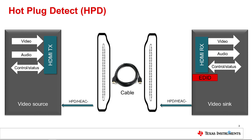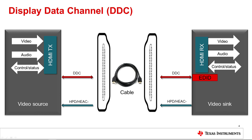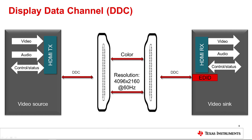HPD should not be asserted until the EDID is available for reading. After 5 volts is applied to the HPD pin, the source will read the capabilities of the sync device via the EDID. After the HPD event, the DDC is used by the HDMI source to determine the capabilities and characteristics of the sync by reading the EDID. The source is then able to adjust parameters that it sends to the sync, including color depth and resolution, which determines the data rate.